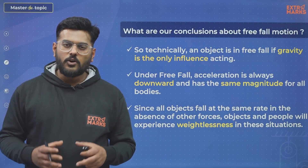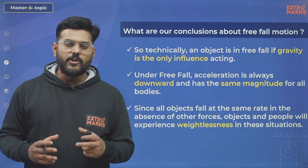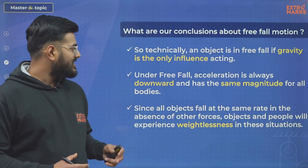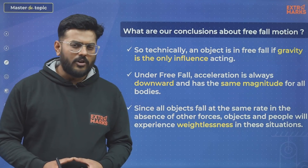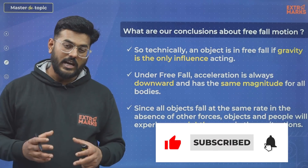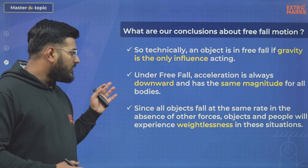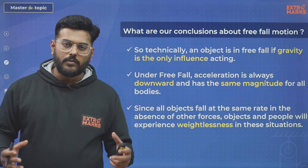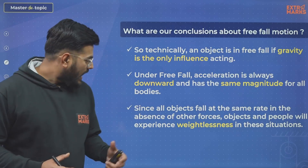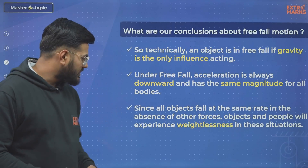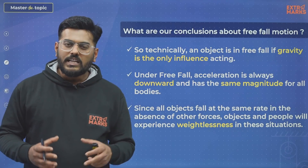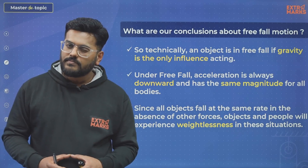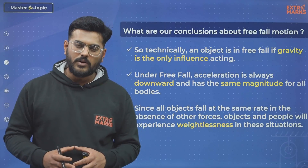Now that we have seen all the major cases of free-fall motion, we can draw key conclusions: first, gravity is the only influence acting on an object in free fall. Second, under free-fall motion, acceleration is always downward and has the same magnitude for all objects, irrespective of their masses. One very important observation is that objects in free-fall motion experience a unique state known as weightlessness — but we will discuss that topic in future sessions.